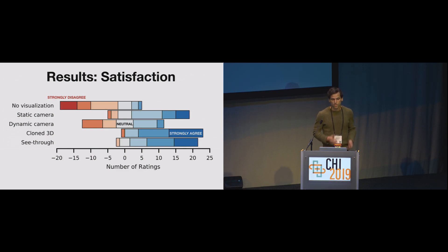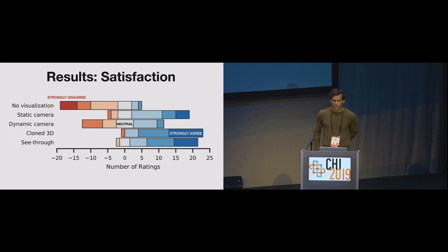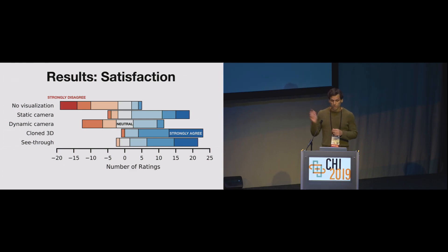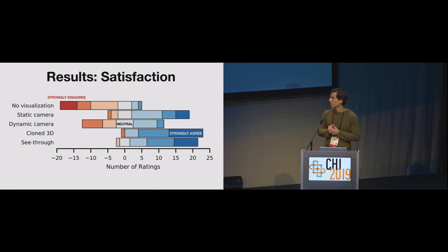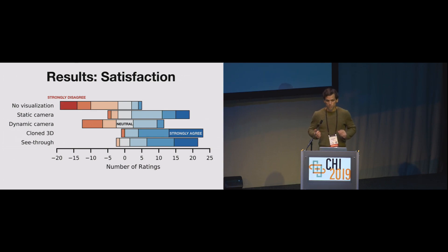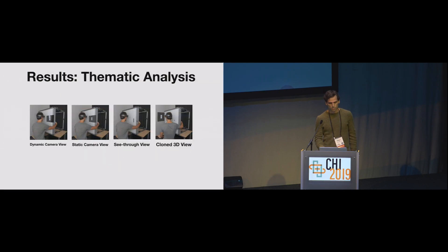Looking at user satisfaction, we see similar patterns. This figure shows the overall rating of the views on a seven-point Likert scale after participants completed all tasks. Dark red indicates strong disagreement, dark blue agreement, and white is neutral. The width of each box shows how many participants chose a specific rating. For example, seven participants gave the clone 3D view the highest rating. In general, the clone 3D view was ranked very highly, as was the see-through view. The worst-ranked conditions were no visualization and the dynamic camera view.